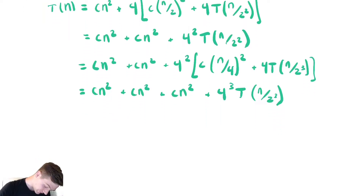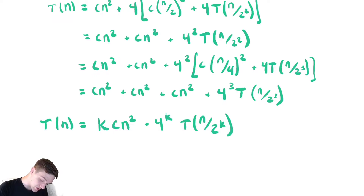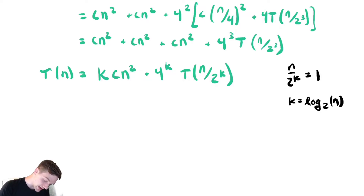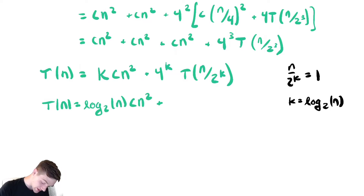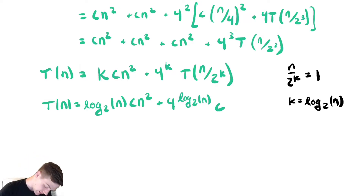So the pattern is: T(n) equals k copies of cn squared plus 4 to the k times T(n over 2 to the k). I need to solve for k by setting n over 2 to the k equal to 1, which gives k equals log base 2 of n. Bringing it all together, T(n) equals log base 2 of n times cn squared, plus 4 to the log base 2 of n times T(1). Since T(1) is just c, we get cn squared log base 2 of n.